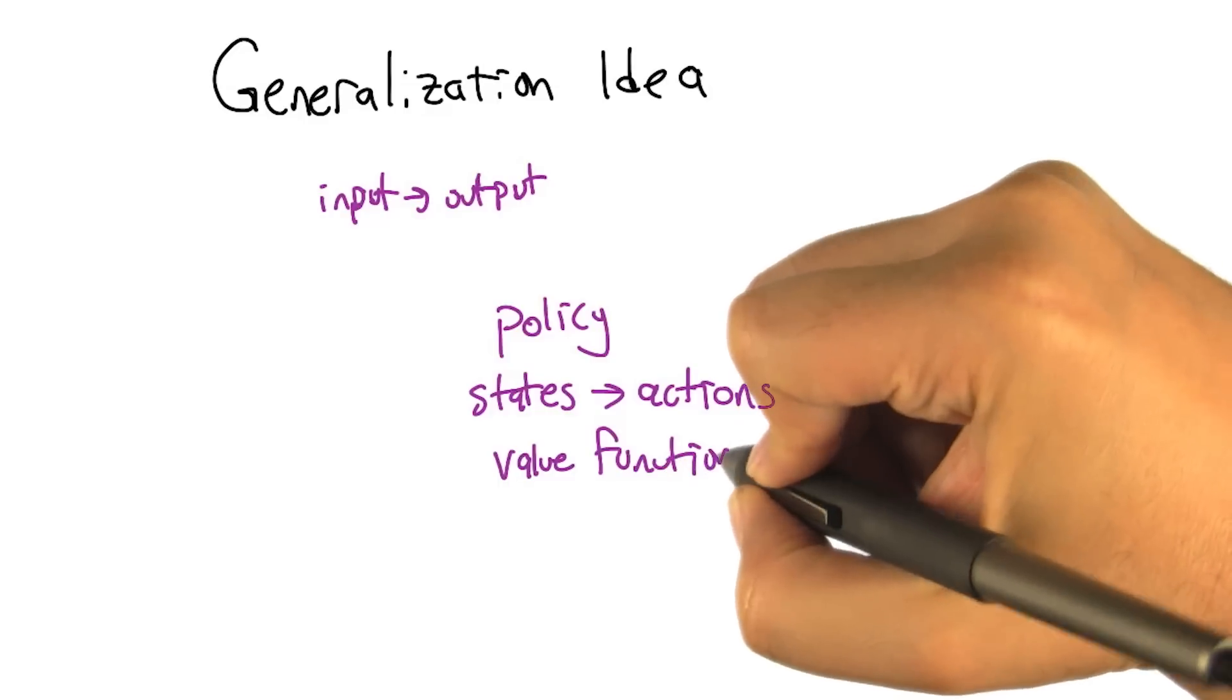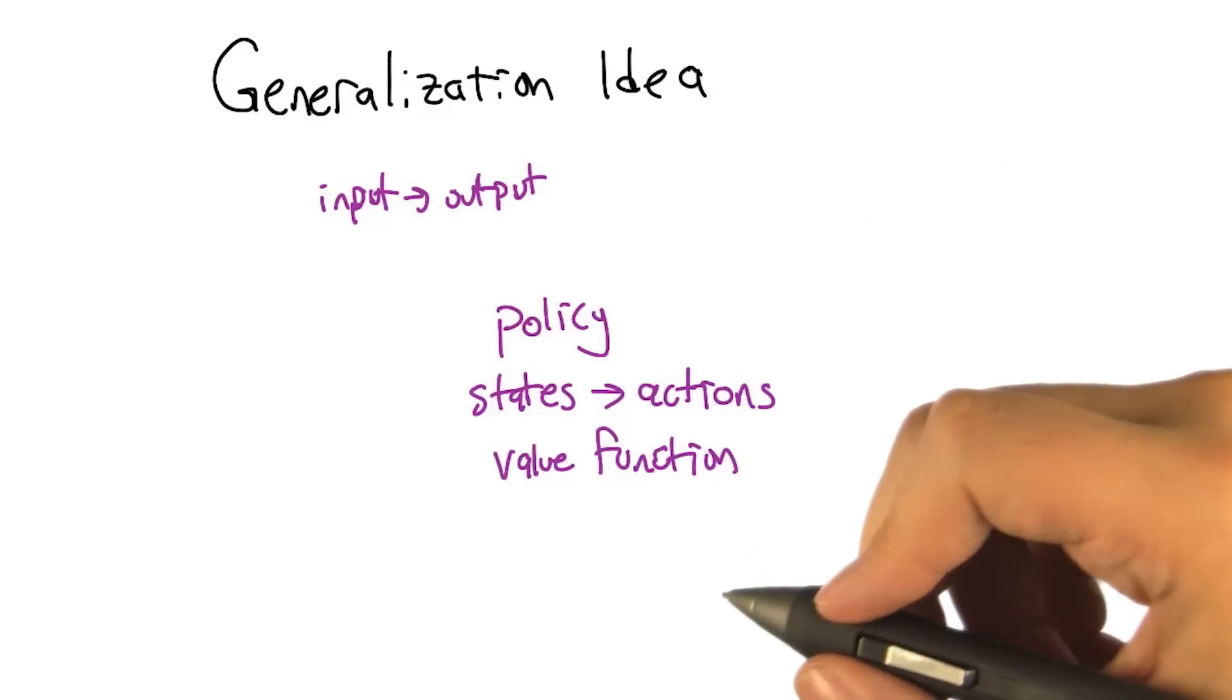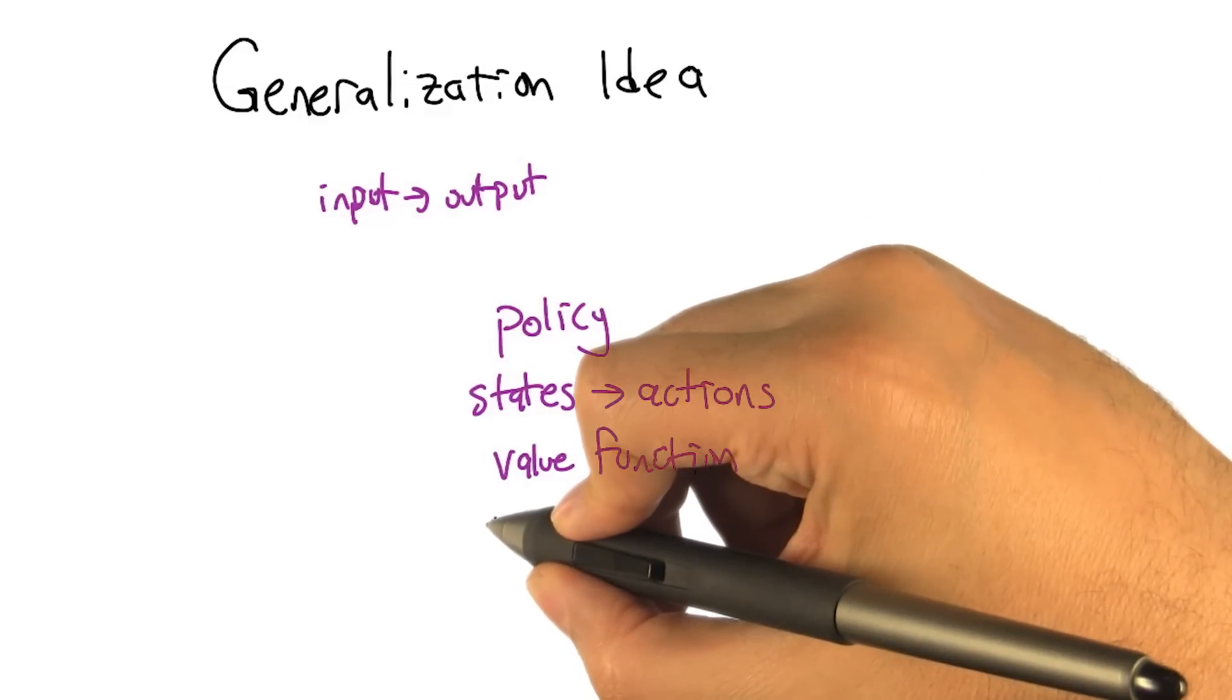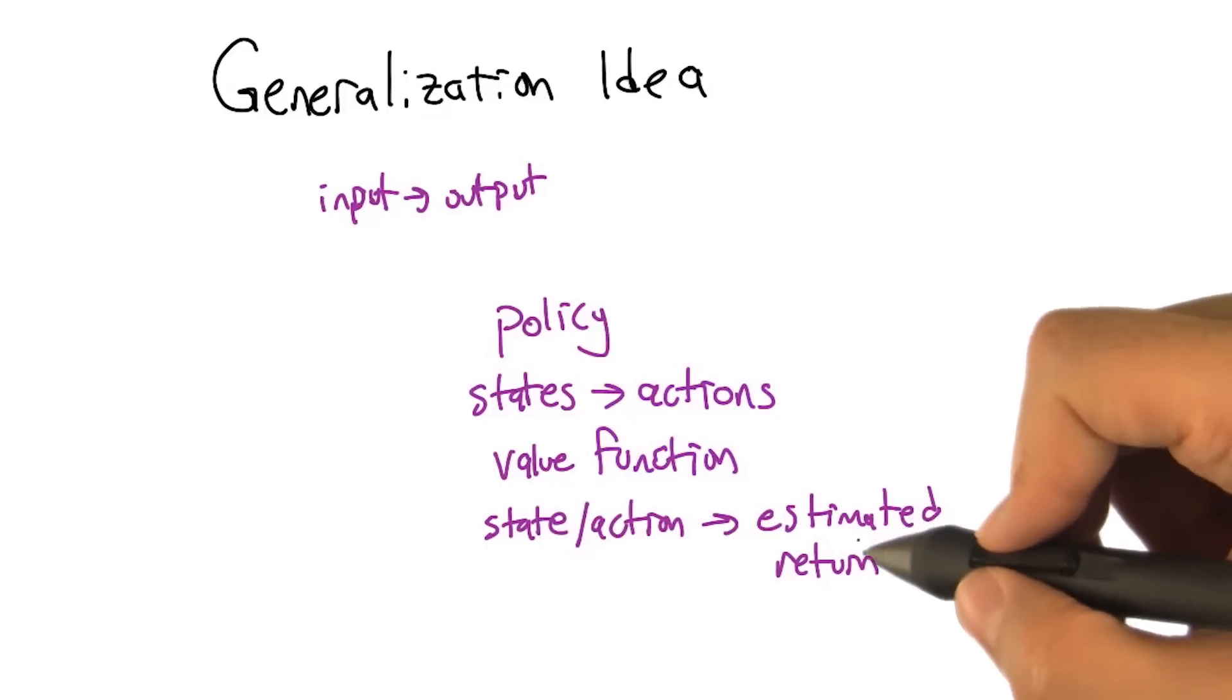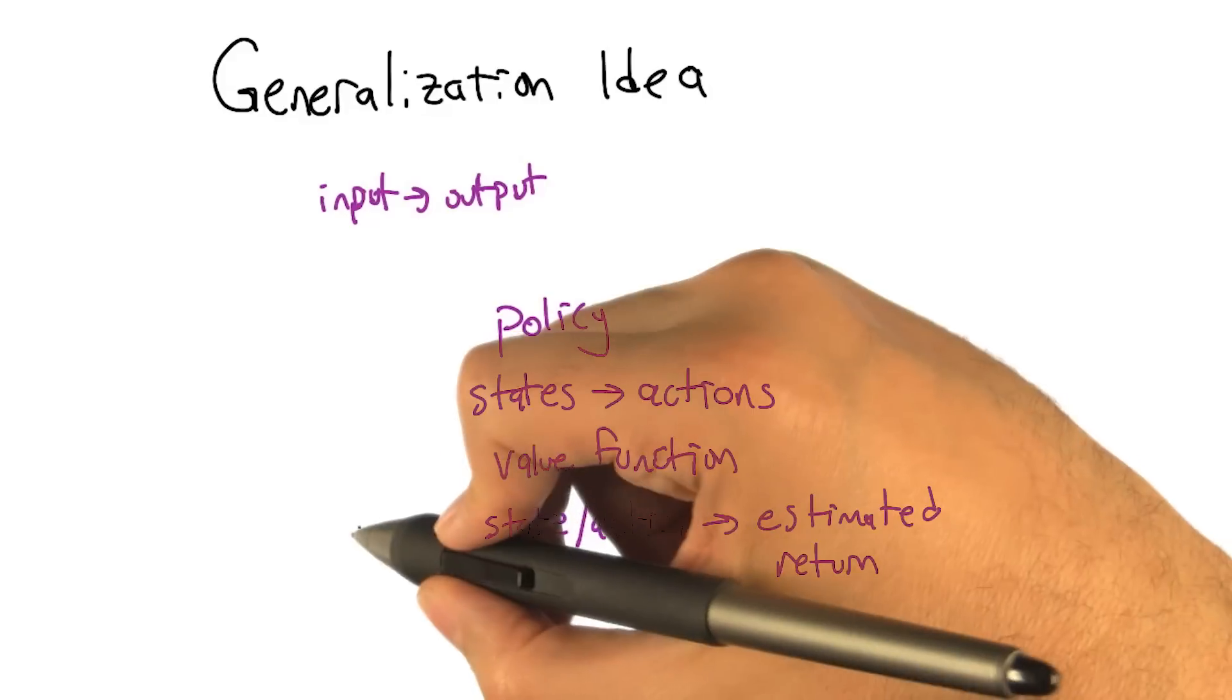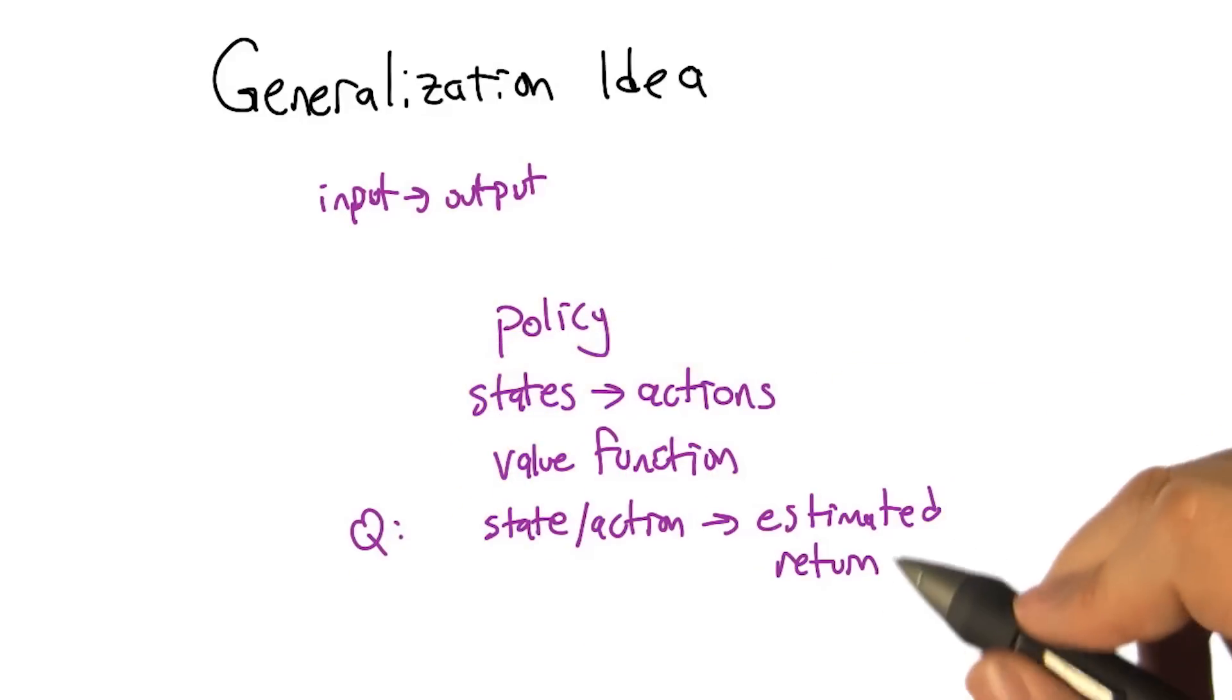Right. But I think what you're pointing out is that we don't know how to learn the policy directly anyway when we're talking about these kinds of reinforcement learning algorithms. So we usually learn a kind of a stand-in for it. And my favorite one is the value function, which is where you're now mapping states to some number, to r. Right. So we can map, for example, states and actions to the estimated return. That's what the Q function does. And that's another function that we could be trying to learn.